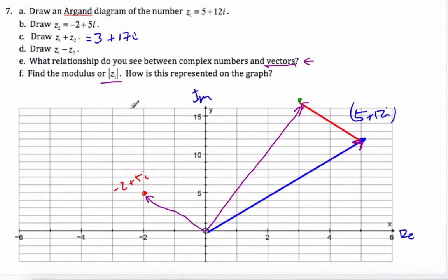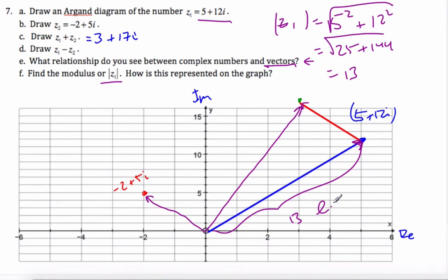And then finally, the modulus of Z1, how is this represented on the graph? Well, if I want to find the modulus of that, Z1 modulus is simply 5 squared plus 12 squared, square root, which is 25 plus 144, which I know to be 13. And that here represents the length of that vector or the line connecting the origin to the point. And that's what's called an Argand diagram.